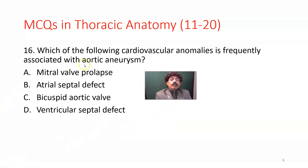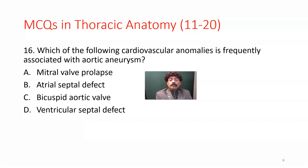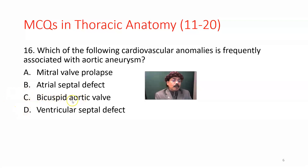Question number 16. Which of the following cardiovascular anomalies is frequently associated with aortic aneurysm? Options are mitral valve prolapse, atrial septal defect, bicuspid aortic valve, and ventricular septal defect. The answer should be bicuspid aortic valve. In that condition, there will be altered hemodynamic forces that contribute to the formation of the aneurysm. So bicuspid aortic valve is the answer.